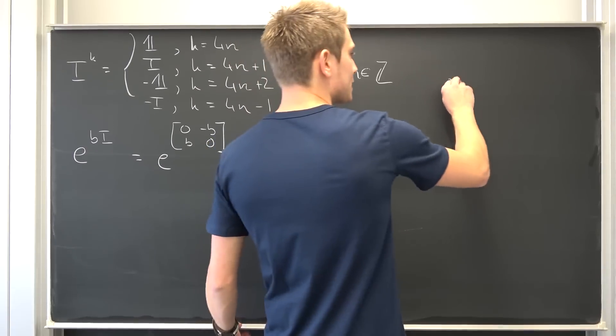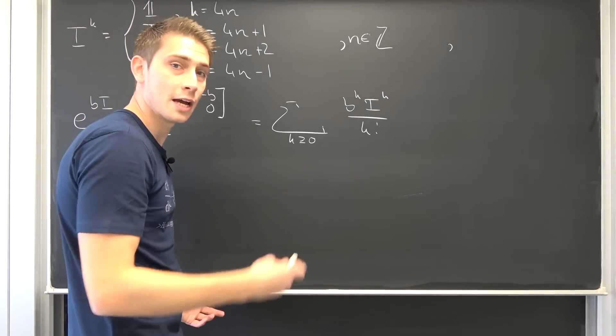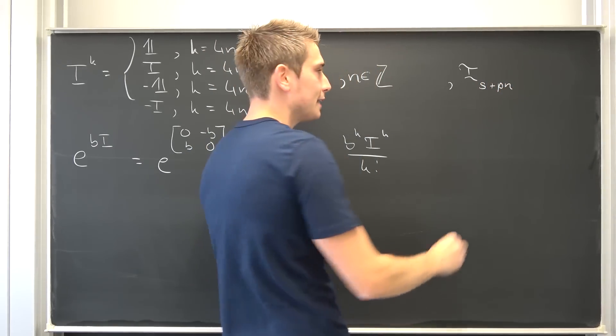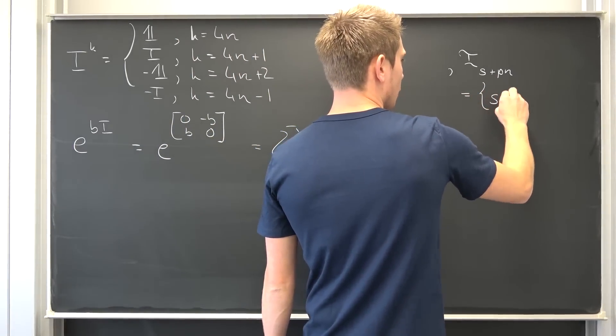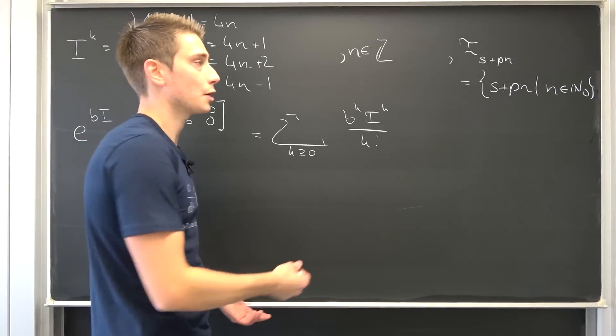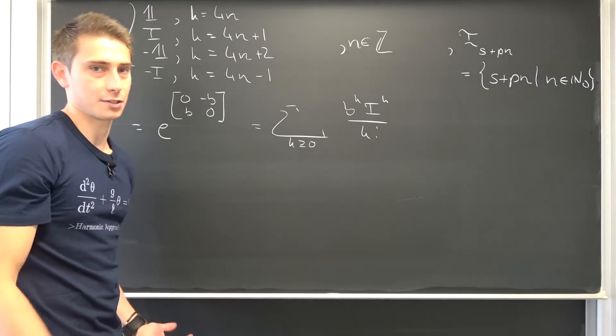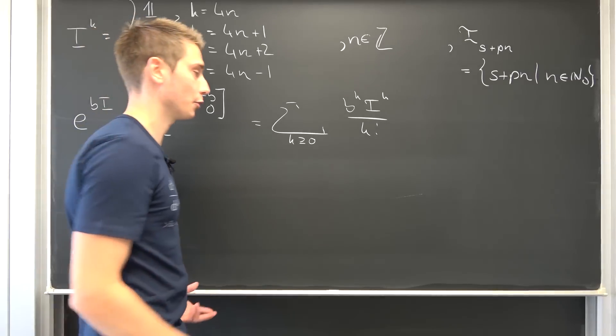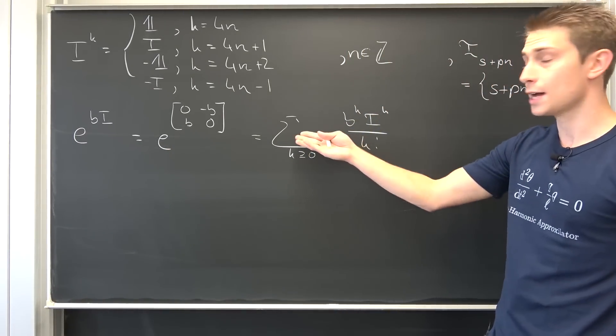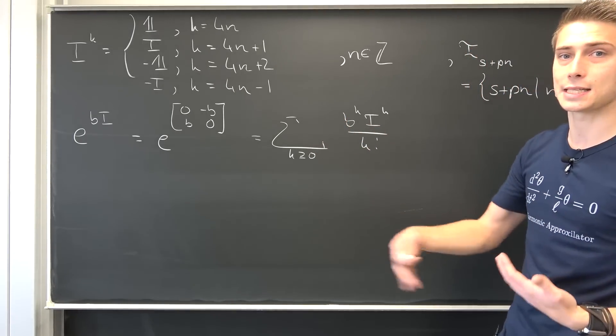But we are going to create ourselves an indexing set and then we are going to argue a bit. Our index k is going to run over a certain set here, all the positive integers. We are going to construct ourselves something different: I with an index of S plus p times n, and this indexing set is just a set of all s plus p n where n is element of the natural numbers with zero. If we were to let partial sums run over partial indexing sets, then we would basically end up with our whole series yet again. We are going to assume that everything converges, that our exponential function converges under this real operator, this 2x2 matrix. If it does converge uniformly and absolutely, we can actually drag it out, break the sum up into partial sums.